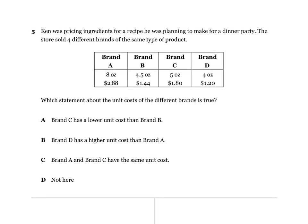Number five: Ken was pricing ingredients for a recipe he was planning to make for a dinner party. The store sold four different brands of the same type of product. Which statement about the unit cost of the different brands is true? Remember, unit cost means unit rate, and unit means one. So you're going to have to do that for every brand — you'll have to do a WKU for every brand.